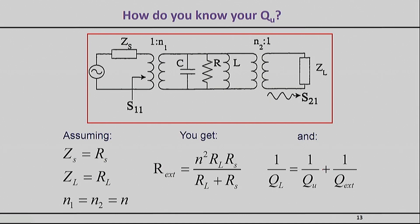Here's how the equations work out for the loading case I showed you before. To make things simple, I will assume that my Zs is real, my ZL is real, and that the coupling sections are equivalent. If I do that, you will find out that the external resistance that you see is given by n² RL Rs over (RL + Rs). That is the external resistance that you will see when you measure that circuit. Under those conditions, you have this very well-known equation that tells you that Q_unloaded and Q_external are essentially connected in parallel.